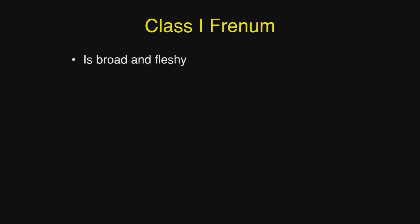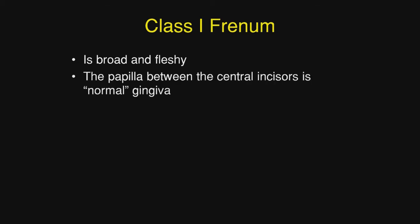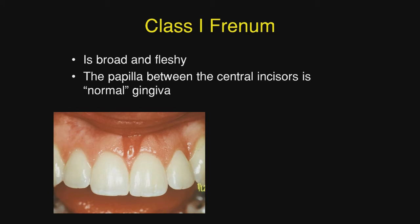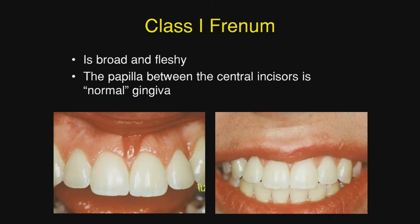There are three classes of frenum. The first class is broad and fleshy. The papilla between the central incisors is normal gingiva, as we see here. This is unesthetic to the patient — notice how this patient purses her lips to hide that fleshy frenum — and you will note the normal gingiva in the interdental area. This is a classic example of a class 1 frenum.